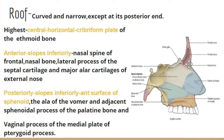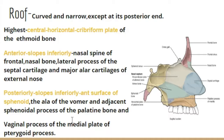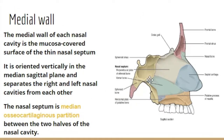To summarize the roof: anteriorly it is formed by the nasal spine of the frontal bone, the nasal bone, and the septal cartilage; the middle part is the cribriform plate of the ethmoid; posteriorly it is the downward-sloping body of the sphenoid bone, with minor contributions from the sphenoidal process of the palatine bone and the medial plate of the pterygoid. Now let's move on to the more important medial wall.